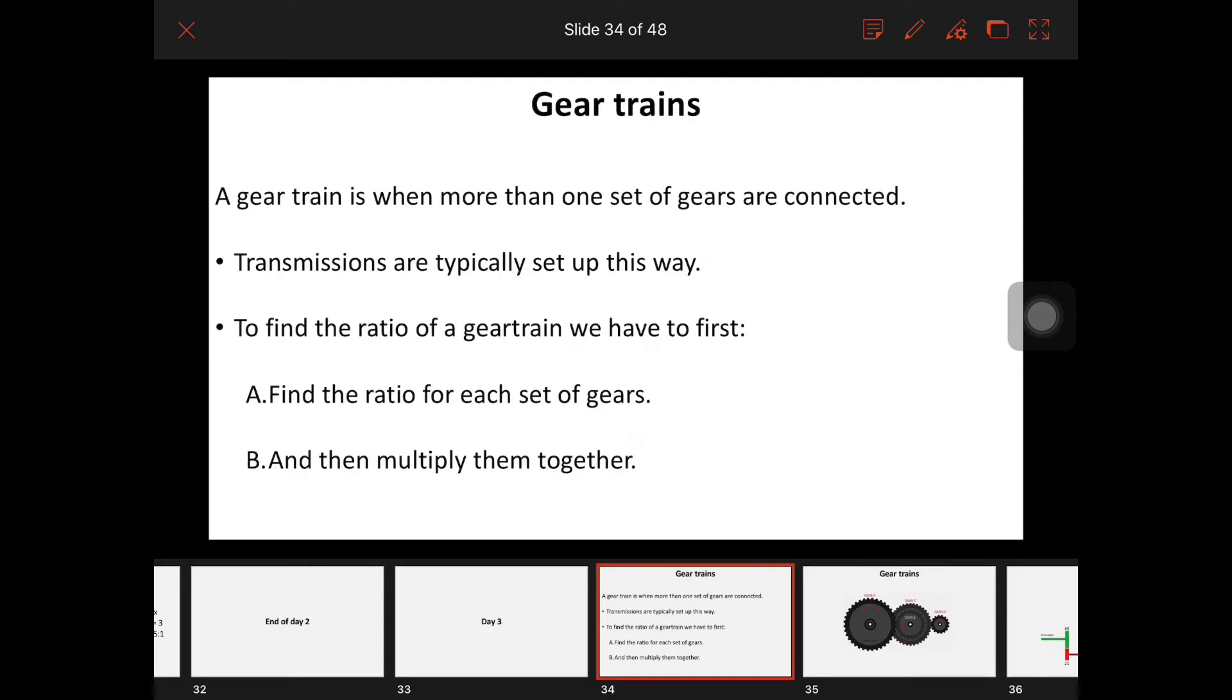Gear trains are when more than one set of gears are connected. We see this a lot of times. Transmissions are a classic example of gear trains. Pretty much every gear in a manual or automatic transmission is set up with more than one set of gears. To find the ratio of a gear train, we have to find the ratio for each individual set of gears and then multiply them together.